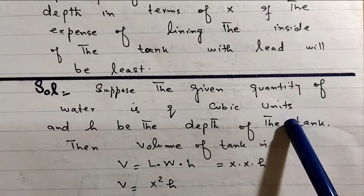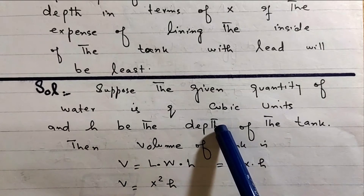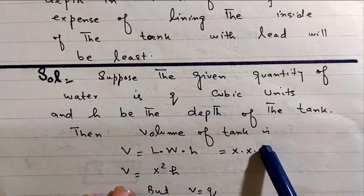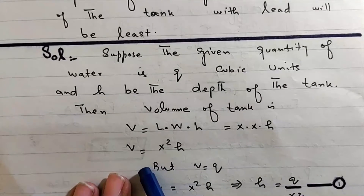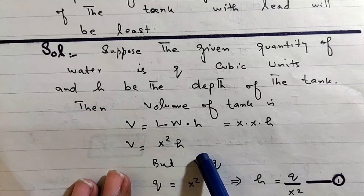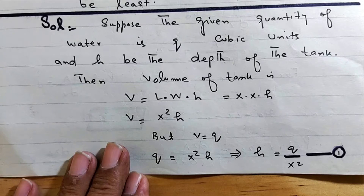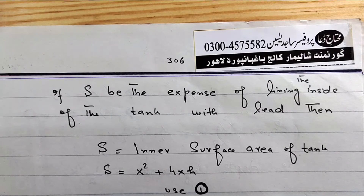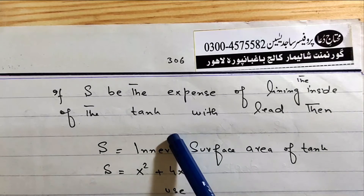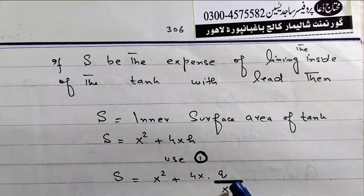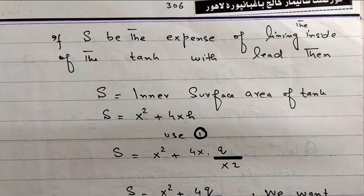Let the base of the tank have side x and let h be the depth of the tank. Then the volume of the tank equals x squared times h equals q, so h equals q over x squared. If S is the expense of lining the inside of the tank with lead, then S equals the inner surface area equals x squared plus 4hx. Substituting h, S equals x squared plus 4q over x.